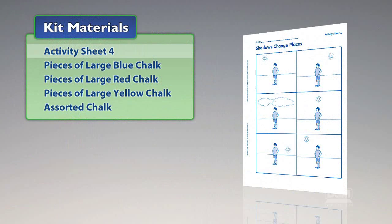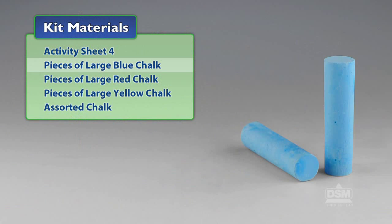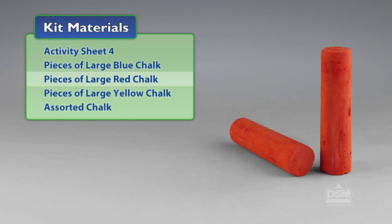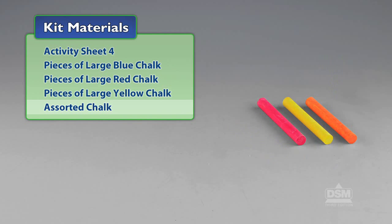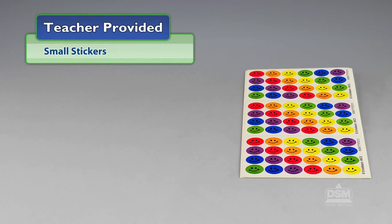You will need the following materials from the kit: Activity Sheet 4, pieces of large blue chalk, pieces of large red chalk, pieces of large yellow chalk, and assorted chalk. You will also need to provide small stickers.